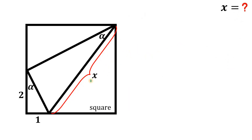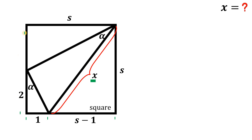Given this figure, the goal is to find the value of x. First, let s be the side length of this square, so all sides of the square equal s. Since this side is also s, and this segment is 1, this segment right over here equals s minus 1. Similarly, if this segment is 2 and the whole segment is s, this segment must equal s minus 2.